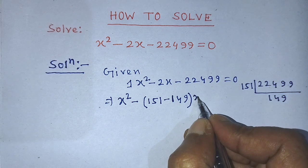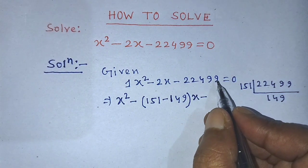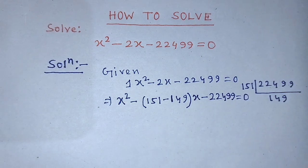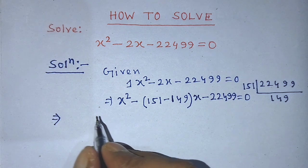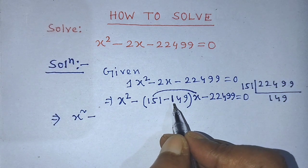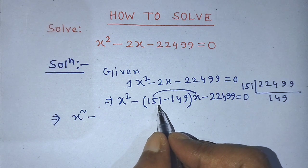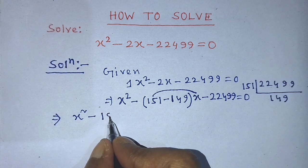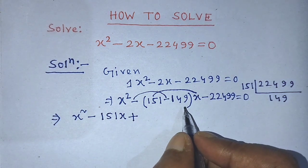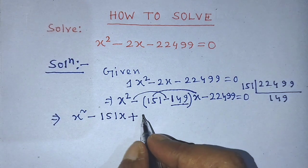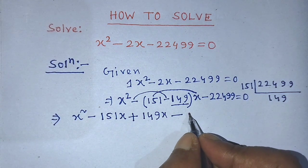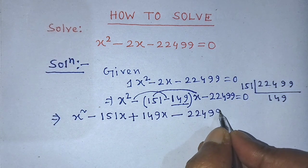So we rewrite the equation with x squared, then instead of minus 2x we write minus (151 minus 149) times x, and then minus 22,499 equals 0. Expanding, this becomes x squared minus 151x plus 149x minus 22,499 is equal to 0.